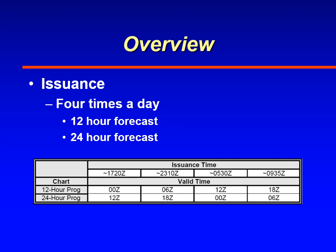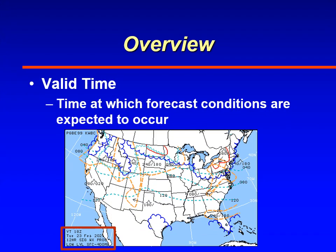Their valid times are forecasted into the future at 0, 6, 12, and 18 Zulu, for both the 12-hour and the 24-hour forecasts. The valid time is the time at which the weather conditions are forecasted to occur, giving you a picture of the hazards across a region at a particular time. The time and date are located at the bottom left-hand corner of the map, with VT indicating the valid time in hours Zulu, along with the date and the type of product.